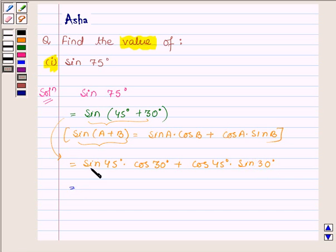Now sine 45 degree is 1 upon root 2, cos 30 degree is root 3 upon 2, plus cos 45 degree is 1 upon root 2 and sine 30 degree is 1 upon 2.